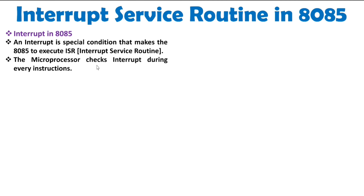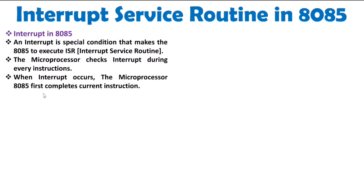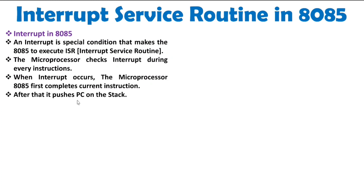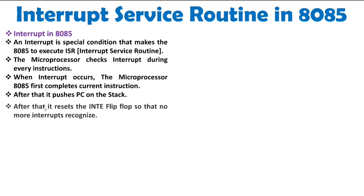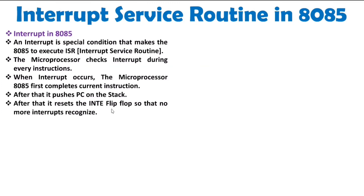When we talk about an interrupt, it is a special condition that makes microprocessor 8085 execute the ISR — interrupt service routine. The microprocessor checks for interrupts during every instruction. Once an interrupt occurs, the microprocessor first executes the current instruction, then pushes the PC onto the stack, resets the interrupt flag so no more interrupts can be recognized, and then transfers program control to the ISR, where the interrupt service routine gets executed.